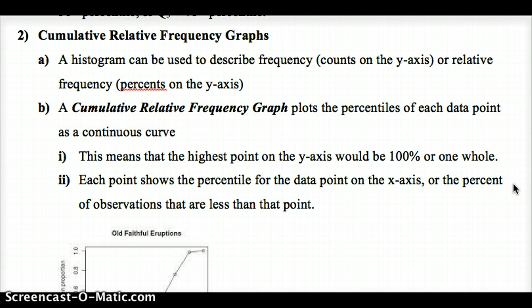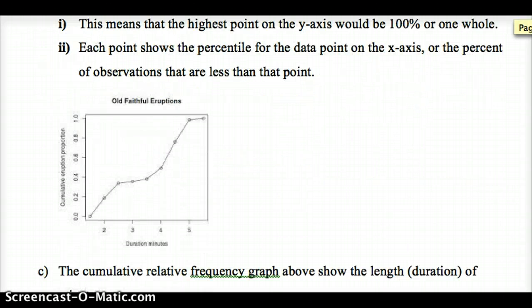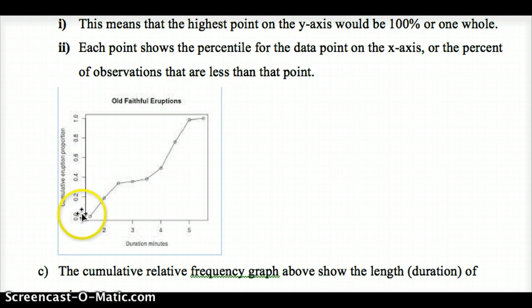A cumulative relative frequency graph plots the percentiles of each data point, so on the y-axis we have 0 to 1, or 0% to 100%, and on the x-axis we have our data points. The highest point on the y-axis would be 100%. Here we have one example using Old Faithful eruptions. The y-axis goes from 0 to 1, with 1 being 100%, 0 being 0%, and 0.2 being 20%.